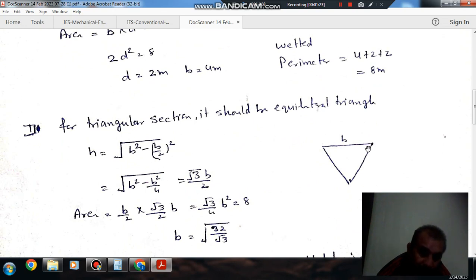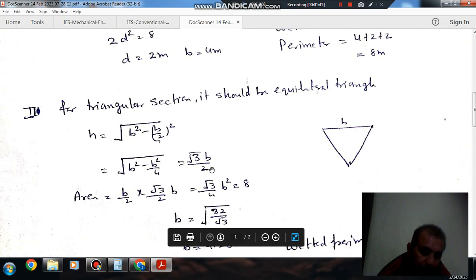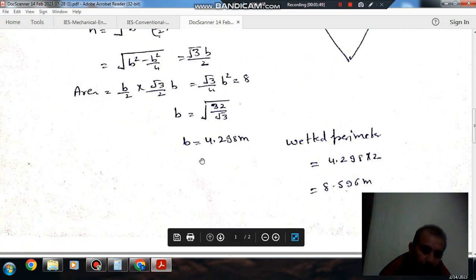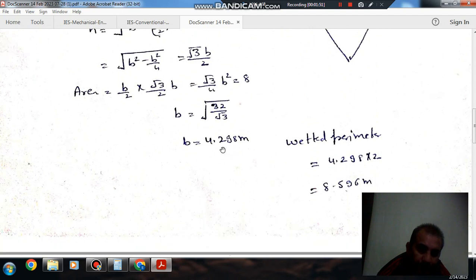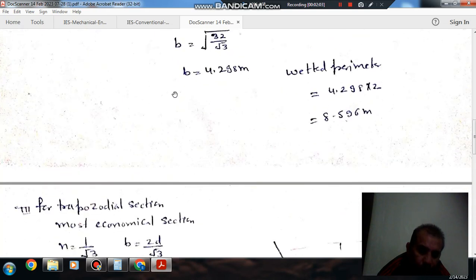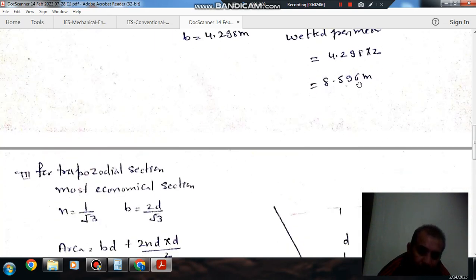For triangular section, it should be equilateral triangle. For each side B, height is √3/2 times B, and area is B times H divided by 2. B can be calculated, and then the wetted perimeter is these two sides, so the wetted perimeter is 8.596 m.